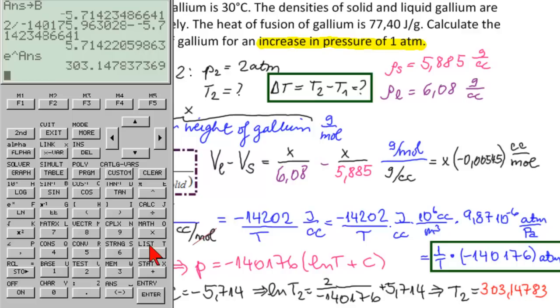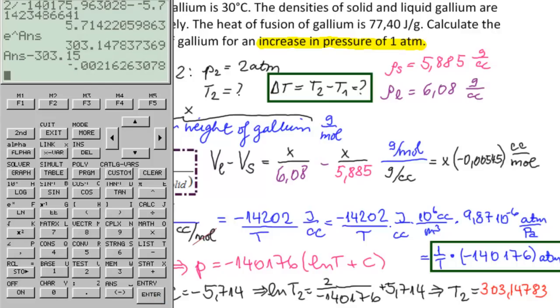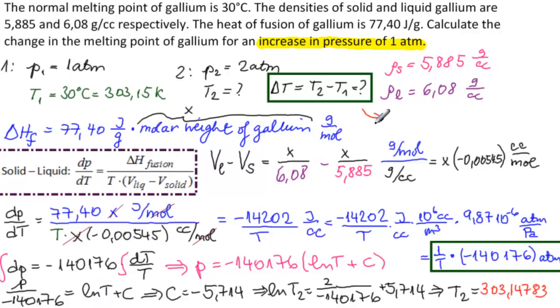And then subtract 303.15, which was our T1. Enter. Which is minus 0.002. So this is minus 0.0021. This is our answer.